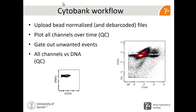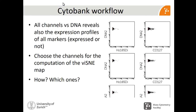Everything starts with uploading the data to Cytobank. With the API, you can actually programmatically put that data up there. Then we start with some basic QC: we check all the channels over time, gate out unwanted events, and check everything versus DNA, because that's the only gate that we make. Gating should not be taken lightly, so we make sure the gate fits. Plotting with a few simple clicks all channels versus DNA reveals also the expression profiles of all markers, so you can see what has been expressed and what not.